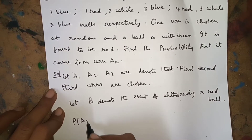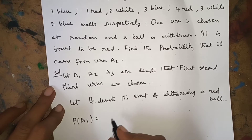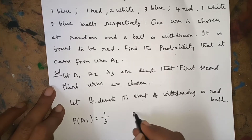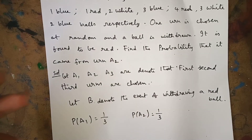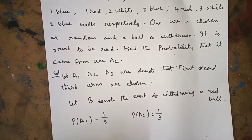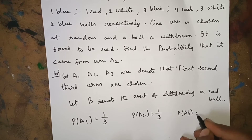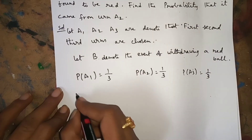Therefore P(A₁) = 1/3, since there are three urns and we choose one. Similarly P(A₂) = 1/3 and P(A₃) = 1/3, because P(E) = m/n — favorable cases divided by total elementary events — and there are three urns with one being chosen each time.